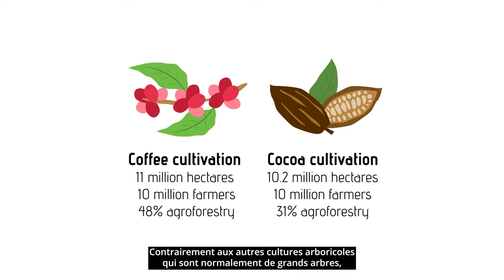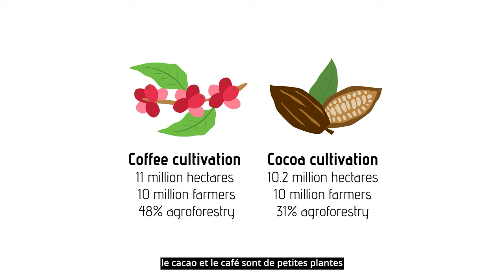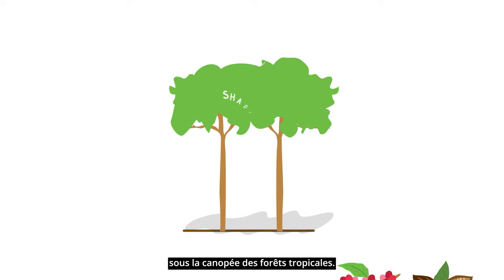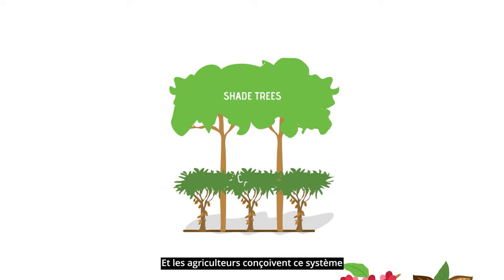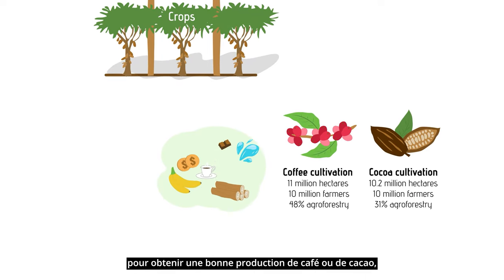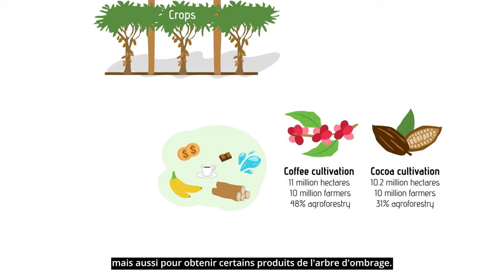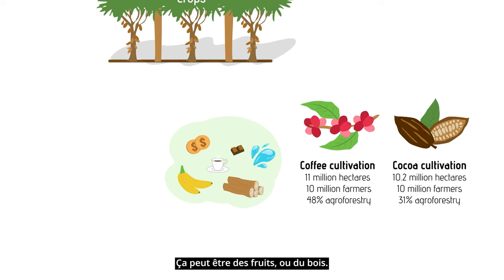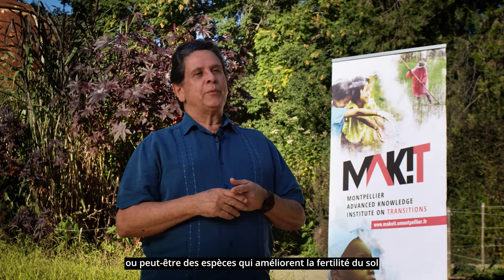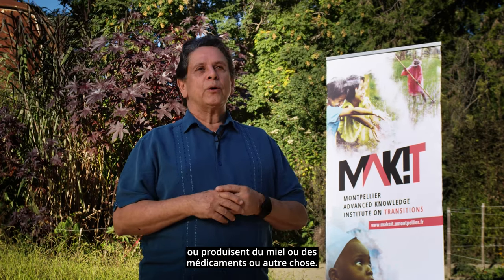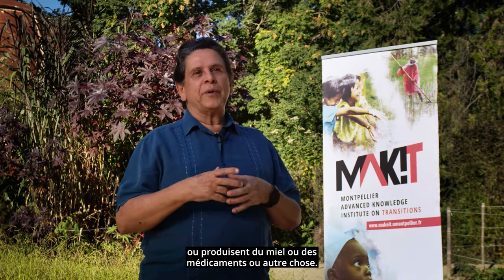Unlike other tree crops that are normally big trees, cacao and coffee are small plants. They naturally develop under the canopy of the tropical forest. Farmers designed this system to obtain good production from the coffee or the cocoa, but also to obtain some products from the shade trees — it might be fruit, it might be timber, it may be species that improve the soil fertility or produce honey or medicine or something.